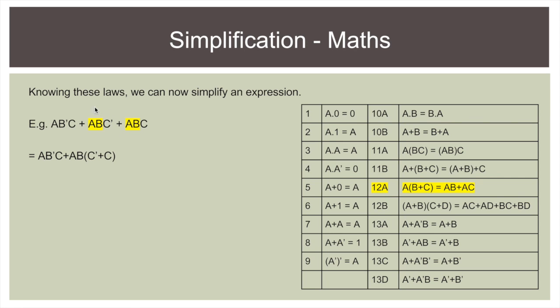So to simplify this expression, we first look to see what laws we can use. And we can see straight up we've got two common terms here. We've got A B here, we've got A B here. And so law 12A says that if we have A and A common, we can pull those out.